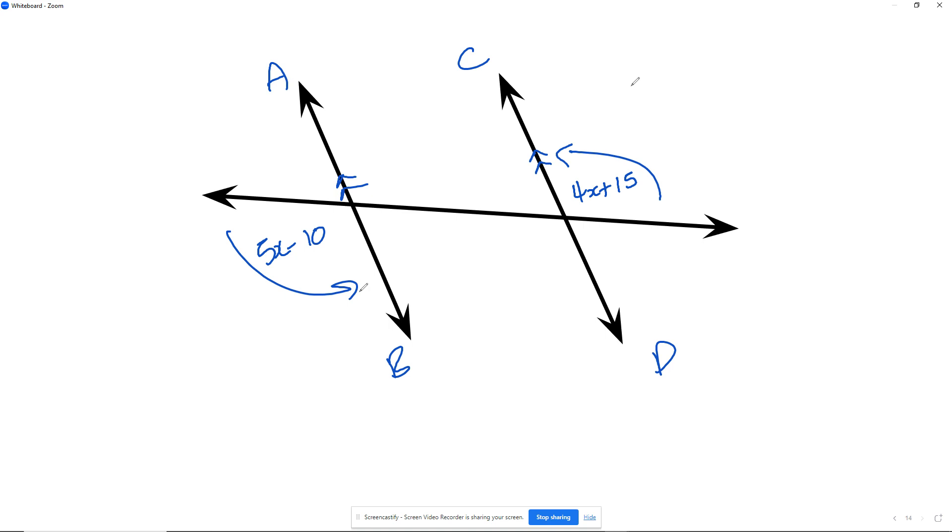So I know that by vertically opposite angles, this would be 5x minus 10 as well. This will be 5x minus 10. So now from here, what I have is the following: